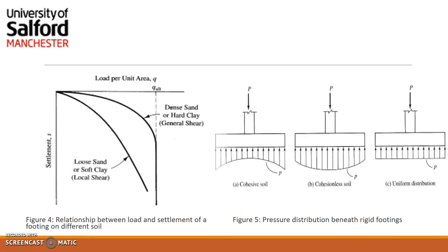Figure 4 gives us the relationship between load and settlement for different soil materials. For dense sand and hard clay, the curve is called general shear, which shows how the soil will shear for that type of material. For loose sand and soft clay, it will be a local shear. So when we plot our model's settlement against load, if we are using loose sand and we get a curve typical of dense sand, we know something went wrong. This graph gives us an idea of how soil behaves depending on the type of soil being used.